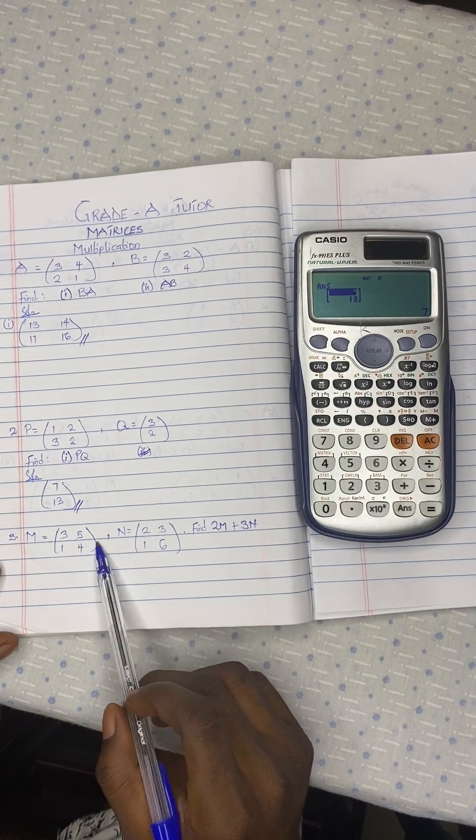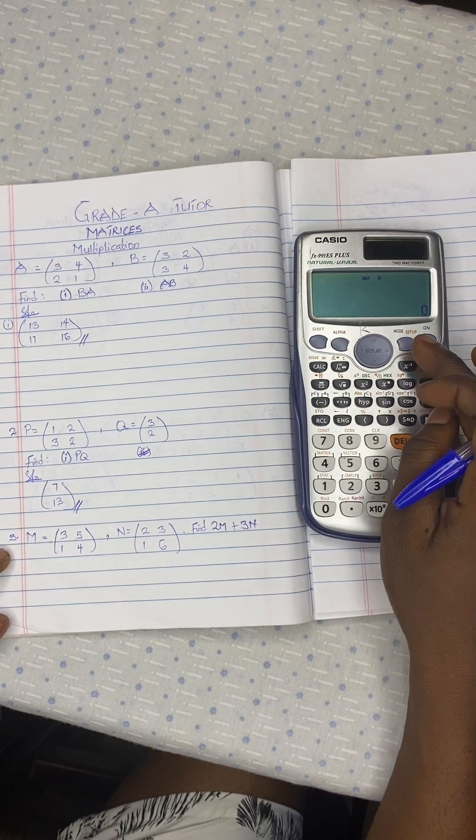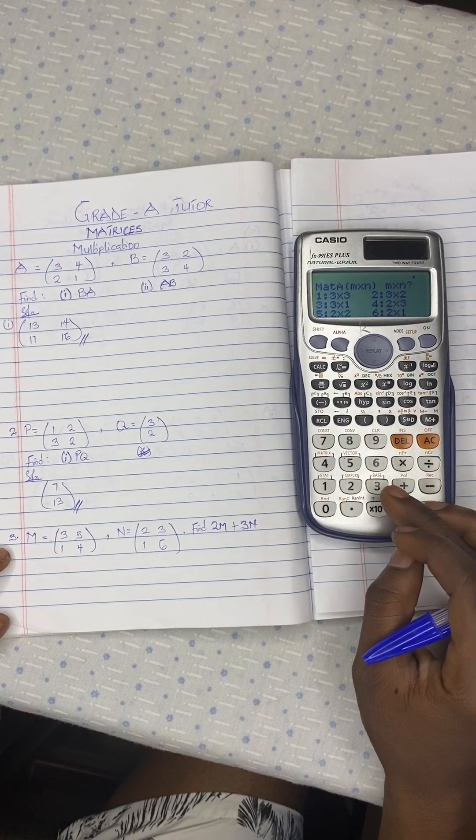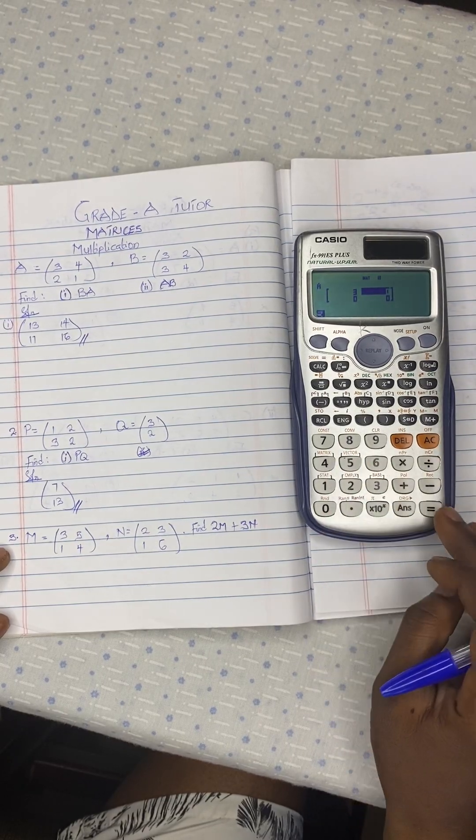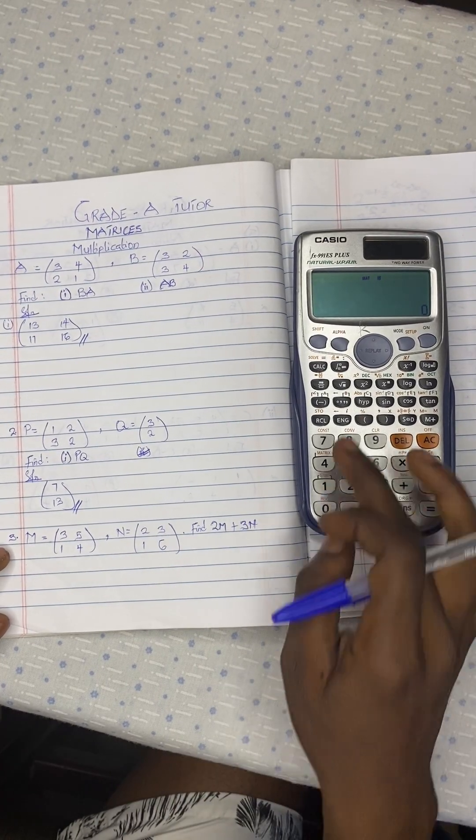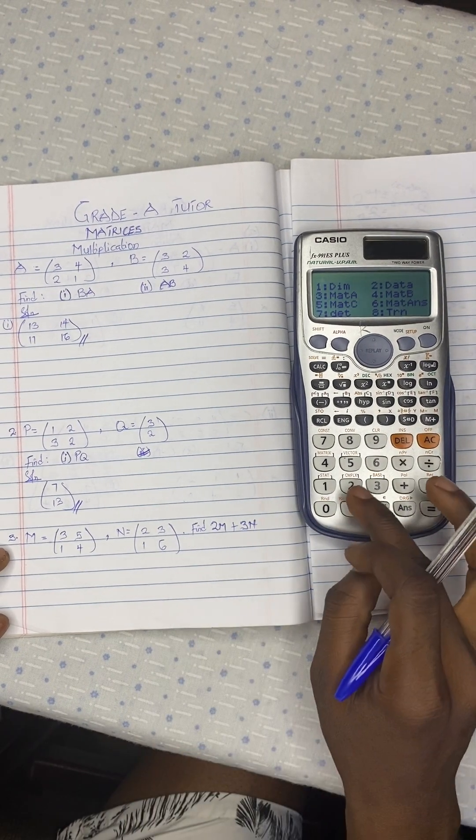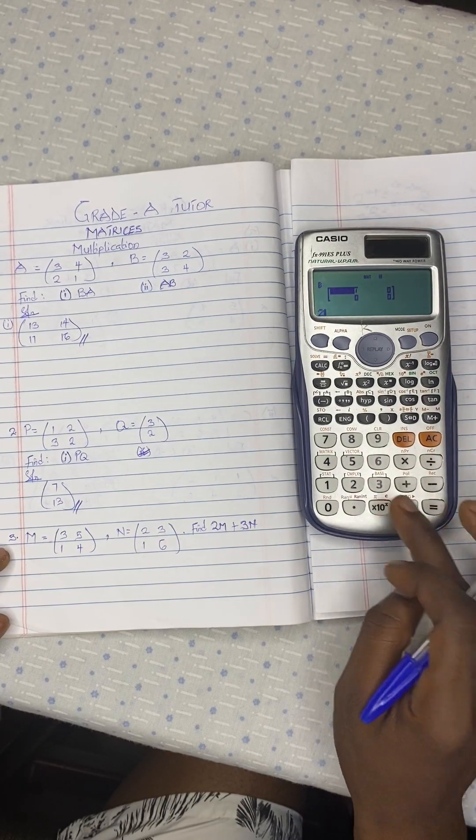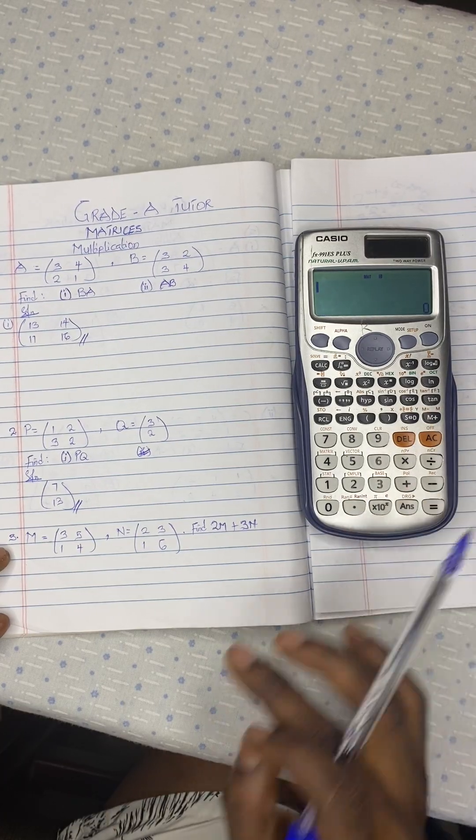So now let's try the last one that is multiplication by a scalar. So we start everything again. Mode 6, choose 1. Then there's 2 by 2. So 3, 5, 1, 4. Then you save it. Come to shift 4. Now data because we are inputting the second one, 2. That is also 2 by 2. So 2, 3, 1, 6. You save that one as well.